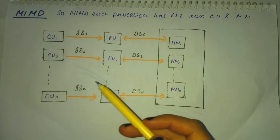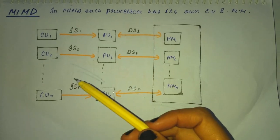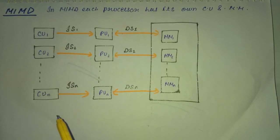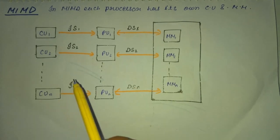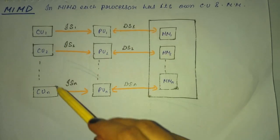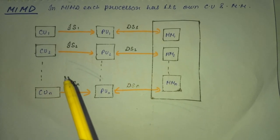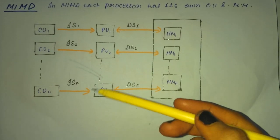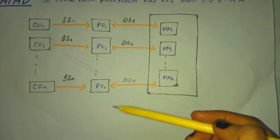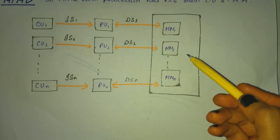MIMD which is multiple instruction stream and multiple data stream. In MIMD, each processor has its own CU and MU as you can see in the figure. All the processors receive different sets of instruction from their respective control unit and operate on different sets of data.